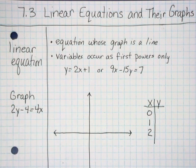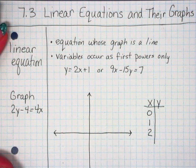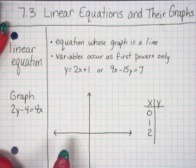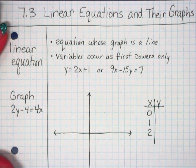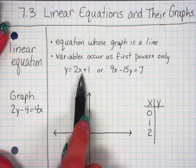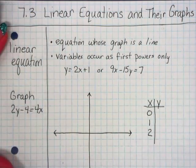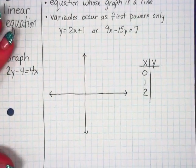All right, so now we have 7.3 linear equations and their graphs. Linear equations are equations whose graph is a line, so it creates a line like you saw in Lesson 7-2. In a linear equation, variables occur as first powers only, so there's no squares, no third powers. It's just like y equals 2x plus 1, or 9x minus 15y equals 7.